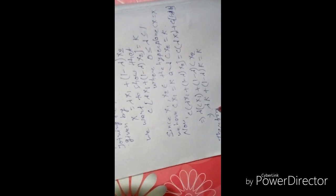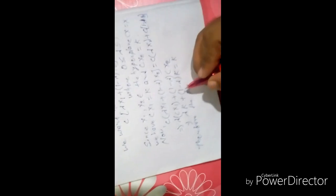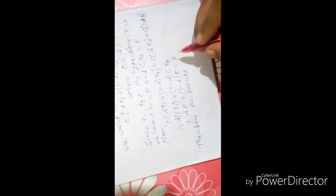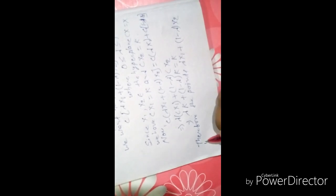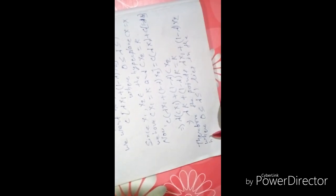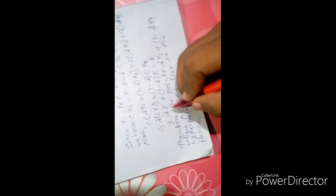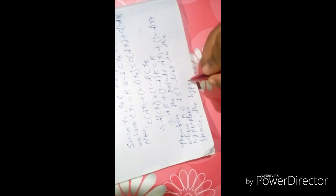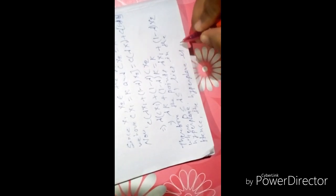Therefore, the point lambda x1 + (1 - lambda)x2, where lambda is greater than or equal to 0 and less than or equal to 1, lies in the hyperplane. Hence, the hyperplane is a convex set.